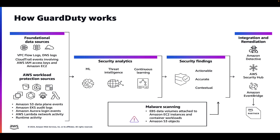Amazon GuardDuty is a threat detection service that helps protect your AWS accounts, containers, regular workloads, AI workloads, and the data within your AWS environment. Using machine learning models and anomaly and threat detection capabilities,